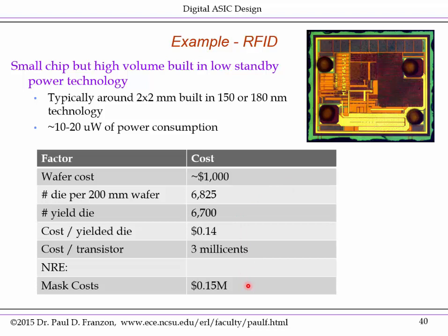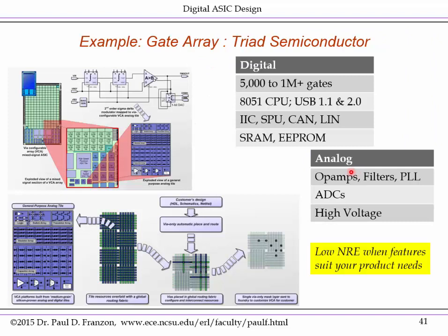Thus, if you're largely digital and need a lot of digital transistors, you are actually better off in the advanced node. The mask costs in legacy nodes are much lower — around $150,000 — so the cost of designing and building the first set of devices is relatively low. Here's an example of a gate array from Triad Semiconductor. It features particular analog functions, a general-purpose analog tile of various transistors connected up by the mask-programmable layers, and even a VIA-programmable layer where you just program where the VIAs are.